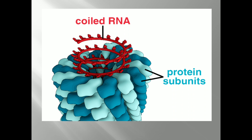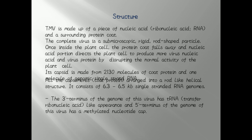Tobacco Mosaic Virus is made up of a piece of nucleic acid, and the genetic material is in the form of ribose nucleic acid — single-stranded RNA — which is surrounded by a protein coat. The complete virus is an ultra-microscopic, rigid, rod-shaped particle. It shows characteristics of both living and non-living things, so we prefer to call it a particle. Once it enters inside the plant cell, the protein coat falls away and the nucleic acid directs the production of multiple copies of TMV viruses.